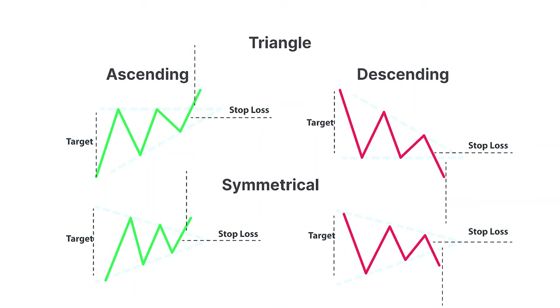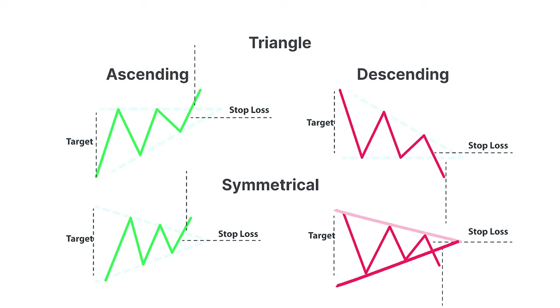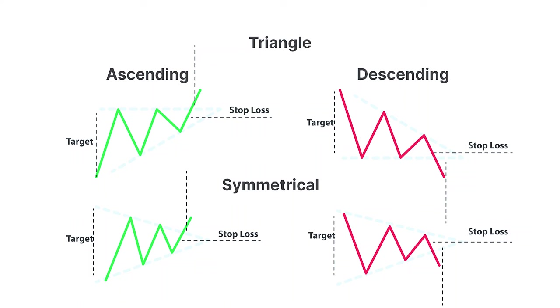First, let's talk about what chart patterns are. Essentially, chart patterns are a combination of trend lines based on price action. For instance, two converging trend lines might form an ascending triangle, descending triangle, or a symmetrical triangle. These patterns give us insight into market sentiment. For example, an ascending triangle — characterized by higher lows and tightening price action at the resistance level — signals that bulls are gaining momentum and suggests a potential upside breakout. On the flip side, a descending triangle with lower highs and consolidation at a support level indicates weakening buyers and stronger bears, likely leading to a price breakdown.